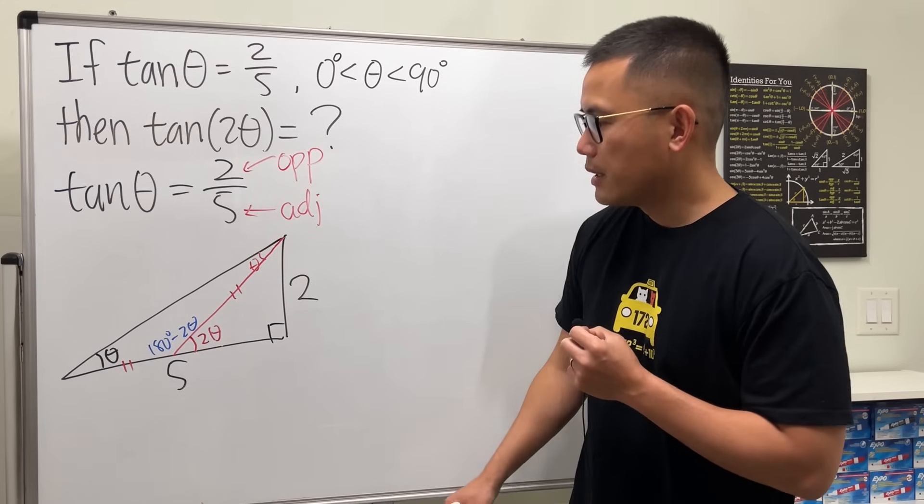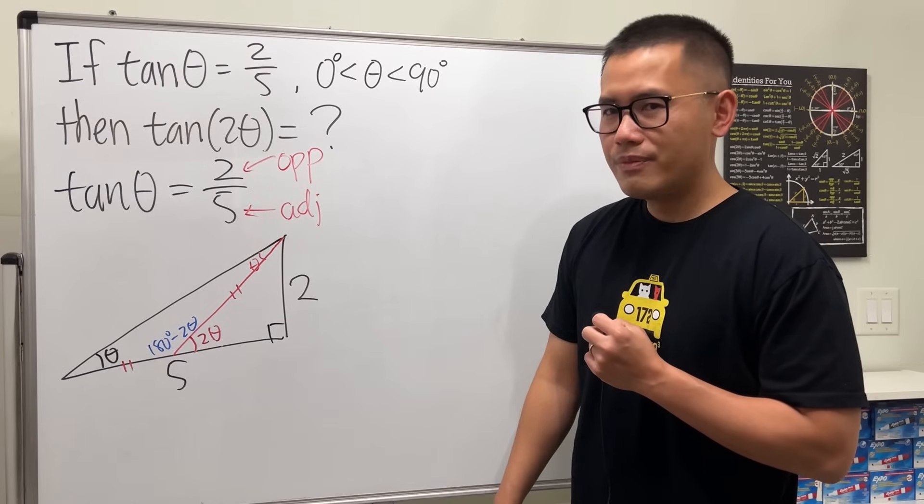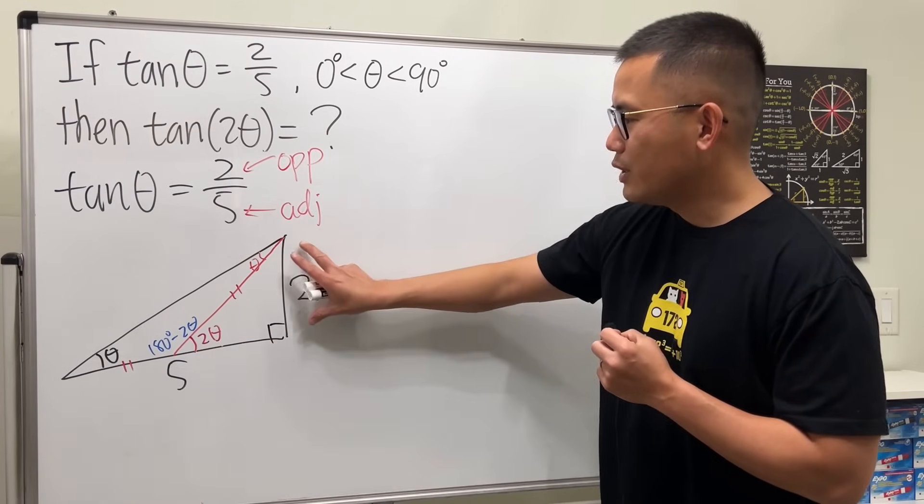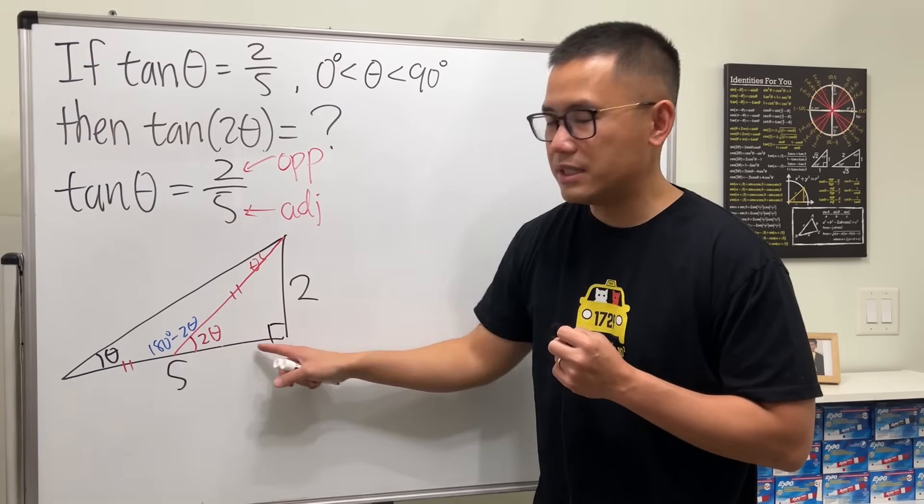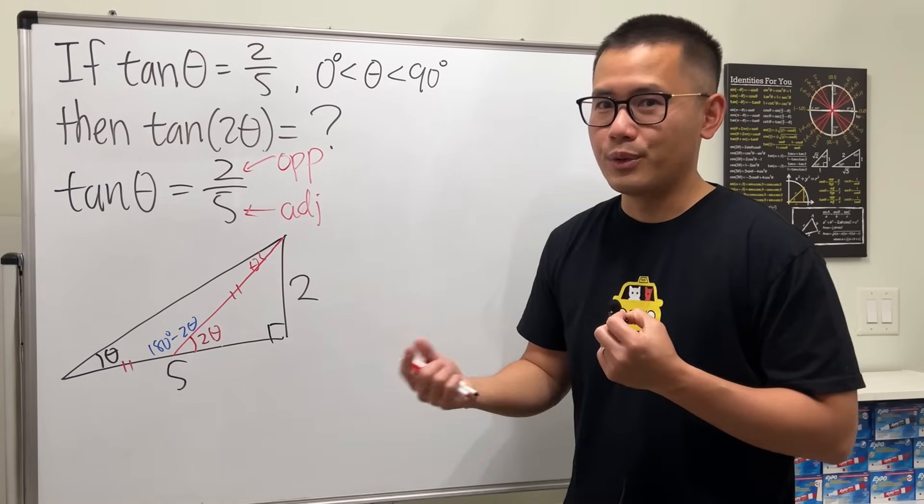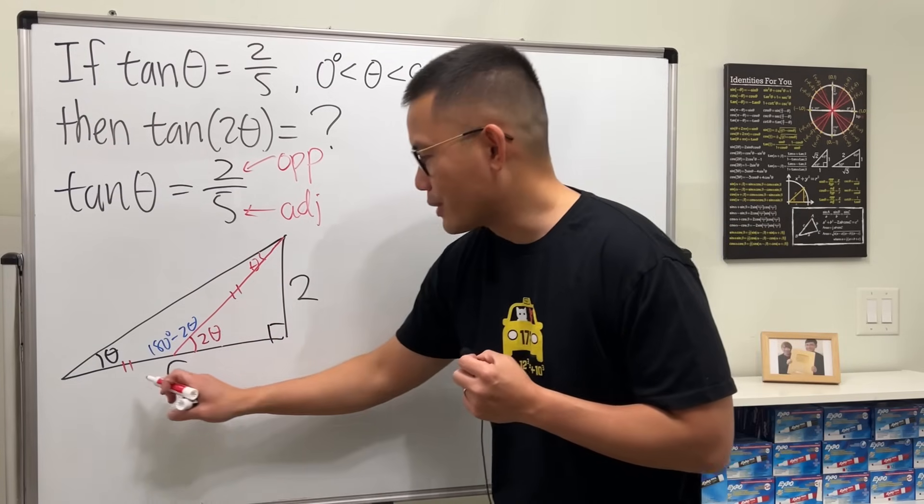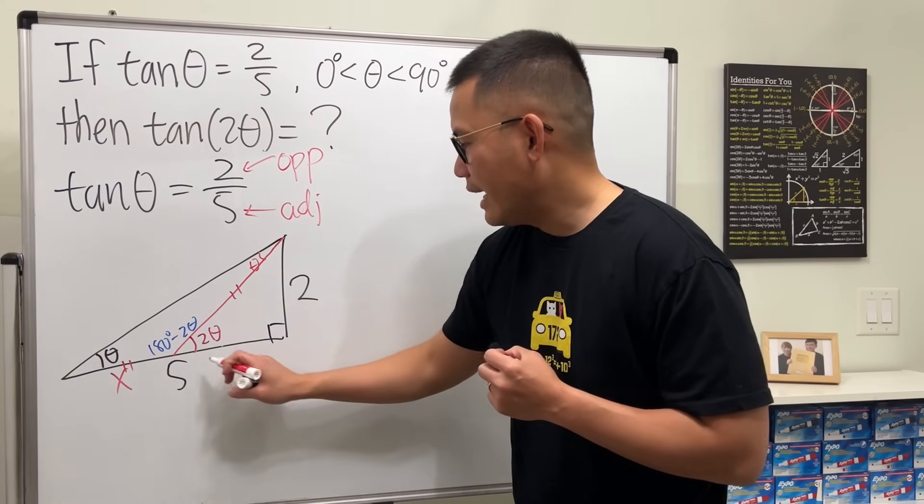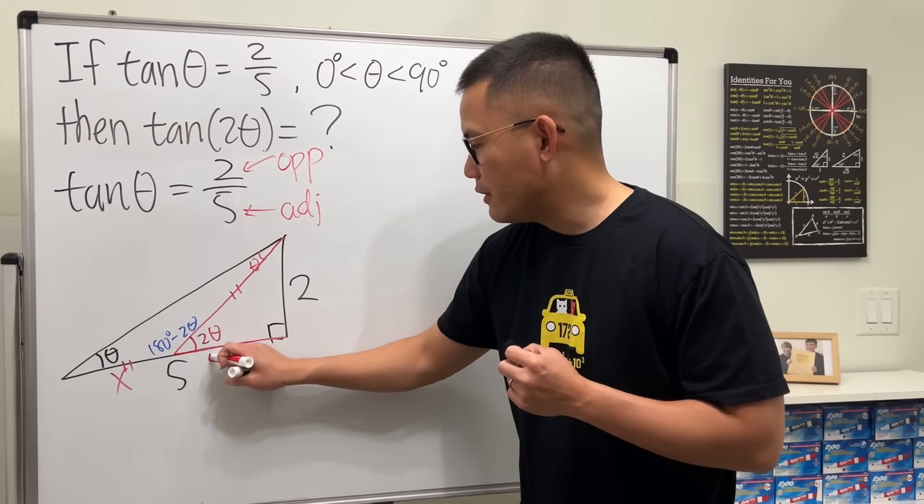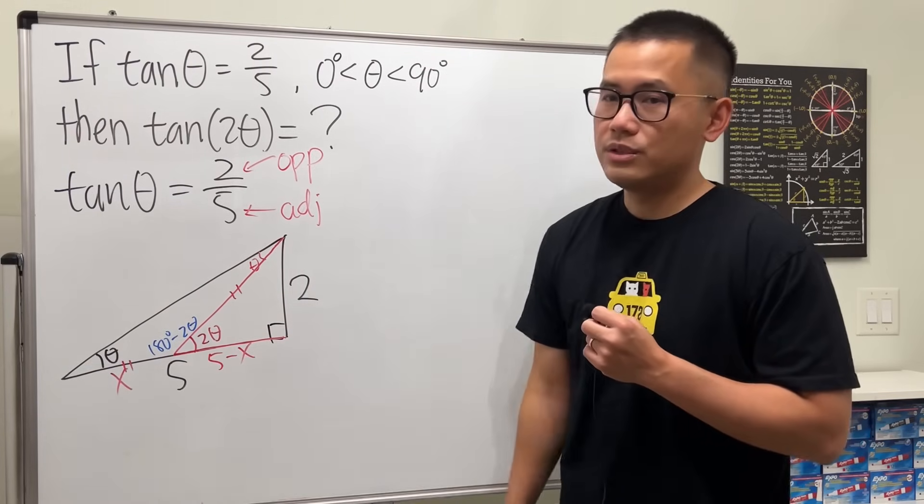Okay, now what though? Well, we're trying to find out tan(2θ), so ideally we have to do 2 over this, but we don't know what this is yet. Well, in math if you don't know something, let's just call it to be x. But since this side and that side are x, I'm actually going to call this right here x, and for this, because the whole thing is 5, it will just be 5 minus x, so that x plus 5 minus x is just equal to 5.